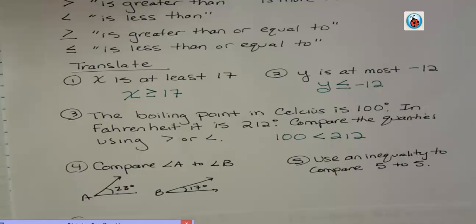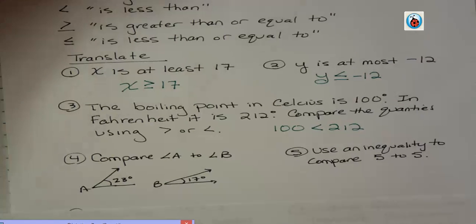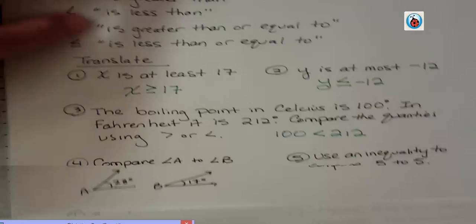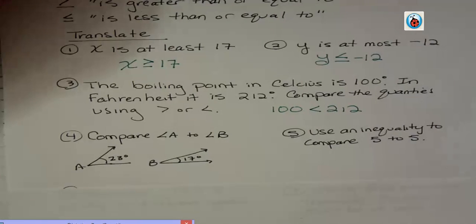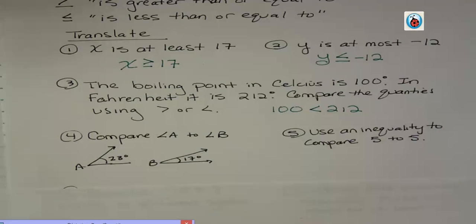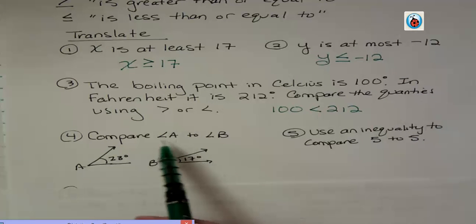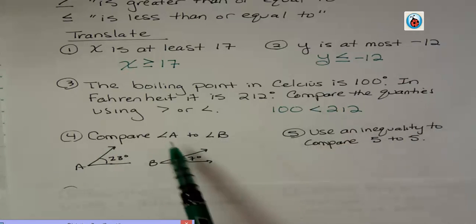If we're asking you to compare and we were using something like this, we have two angles. We say compare angle A. This little symbol is not a greater than or, I mean not a less than symbol. It kind of looks like it, but it actually comes down and then it runs flat along the bottom line. So it's a little different than a less than symbol. That's an angle. Angle A to angle B.